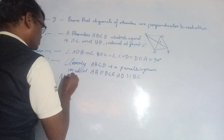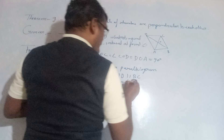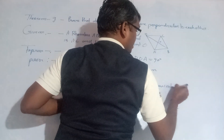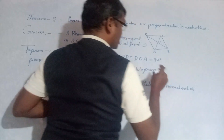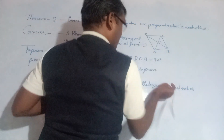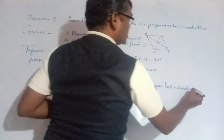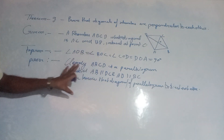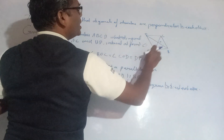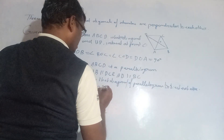We know that the diagonals of a parallelogram bisect each other. So OA = OC and OB = OD.